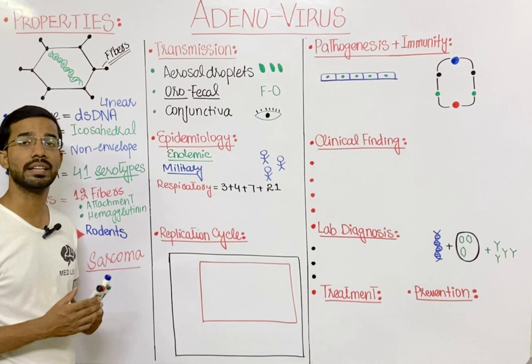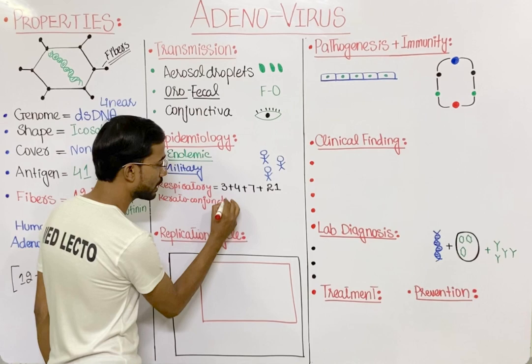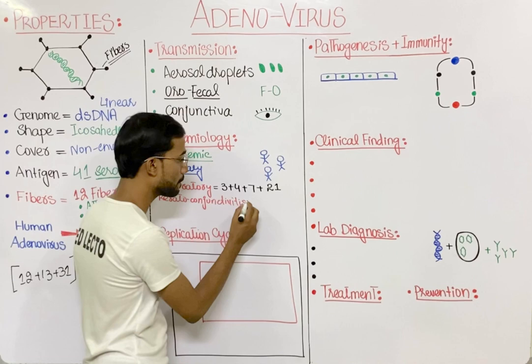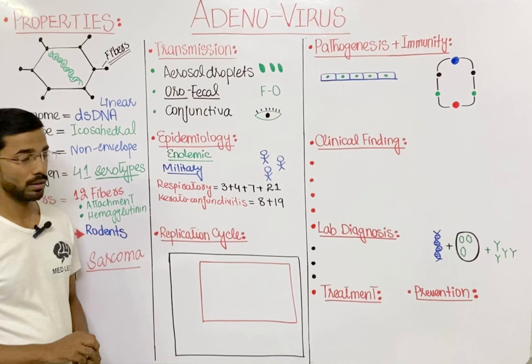The second disease is keratoconjunctivitis. Serotypes 8 and 19 of adenovirus cause specifically epidemic keratoconjunctivitis, which is inflammation of the cornea and the conjunctiva.